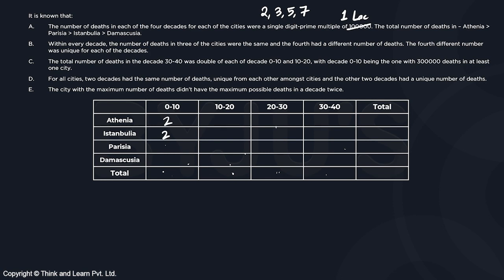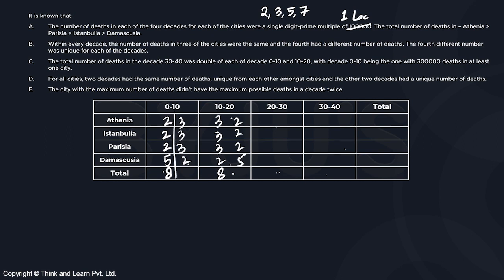Starting with the minimum: if decade 0 to 10 has values like two 2s and a 3, the total is 8 — but we can't replicate 8. Trying with a 5: three 3s and a 2 gives 11, and three 2s and a 5 also gives 11. So both decades 0 to 10 and 10 to 20 have totals of 11 lakh each, giving 22 lakh for decade 30 to 40.